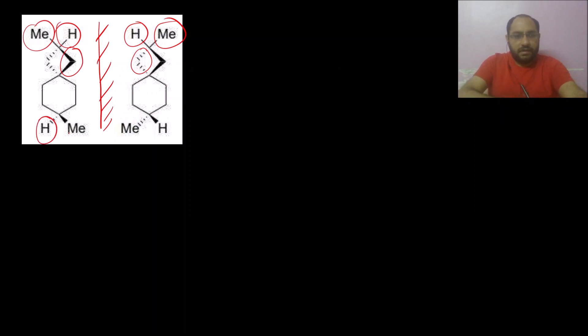So you can see they look like non-superimposable mirror images of each other, that is they are enantiomers.